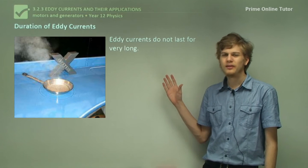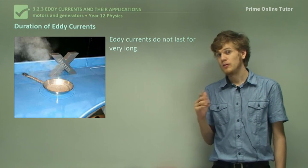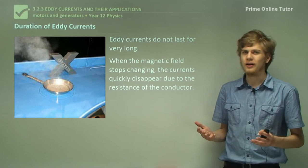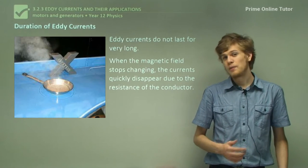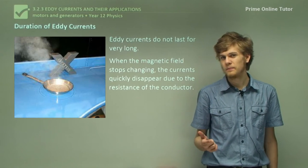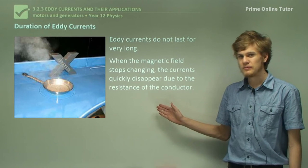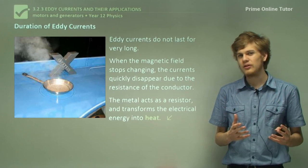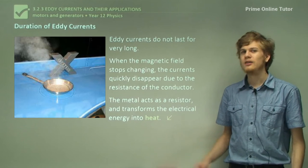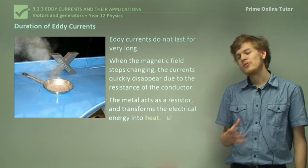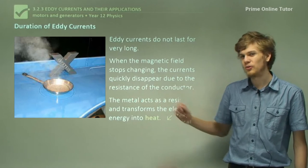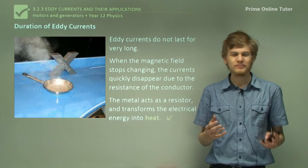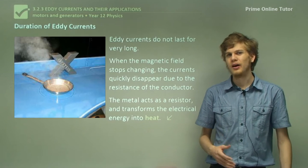Now, eddy currents don't last a particularly long time. When the magnetic field stops changing, the currents will quickly disappear. In an ideal conductor that has no resistance, they might just keep spinning in a little circle forever, never losing energy. But in reality, all conductors have resistance, and this means that the metal will act as a resistor and transform the electrical energy in the conductor into heat energy. The whole thing will heat up. It turns out that one of the applications of eddy currents is to use this to heat up source pins and so on, which we can see in this photograph. So now that we know what eddy currents are, we'll be doing some more sections on how we can use them to do useful work.